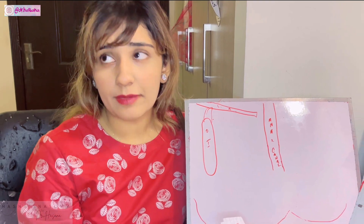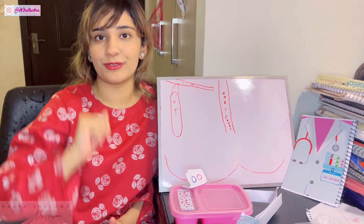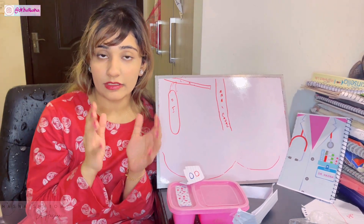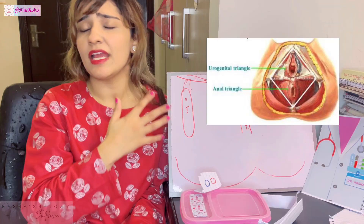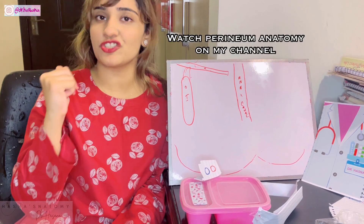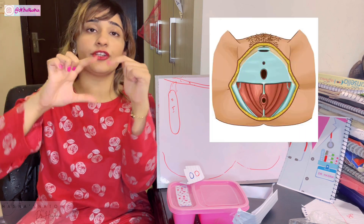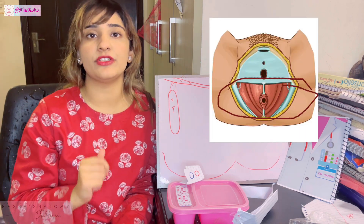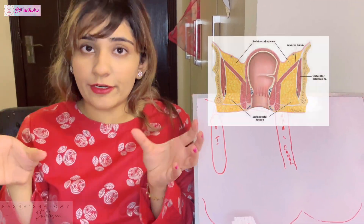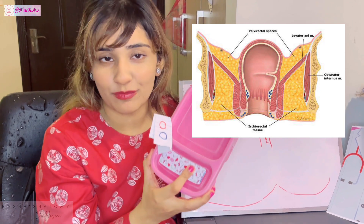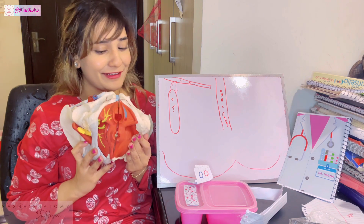So what is the ischioanal fossa? Everything in anatomy starts with a basic definition and then we build concepts all the way to the top. Before you talk about the ischioanal fossa, you should definitely know what the perineum is — it's a diamond-shaped structure located below the pelvic diaphragm. If that's not making sense, check out the perineum videos first. Your perineum is divided into two parts: the anterior urogenital part and the posterior anal region. In the anal region we have the anal canal.